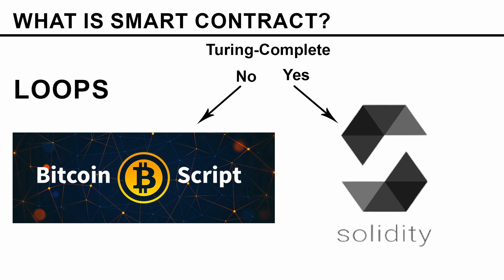If you are familiar with programming, you know what loops are — for loops, while loops, do-while loops, etc. Basically, a loop is a way to tell the program to execute a certain piece of code many times, like a hundred times, a thousand times, or to keep doing something until a certain condition has been met, then stop the iteration.